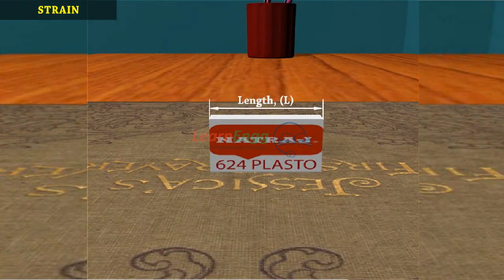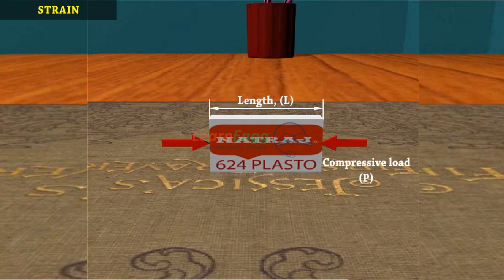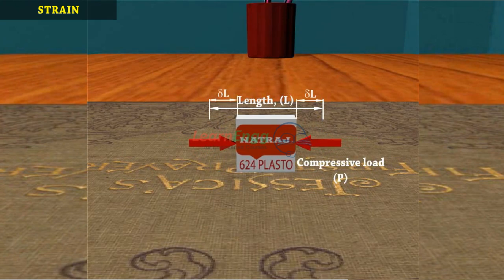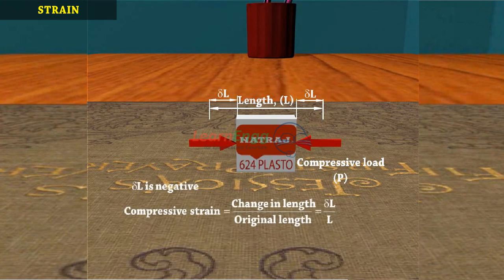The length of eraser is decreased and negative strain is occurred. Therefore, compressive strain equals change in length Δl by original length L.